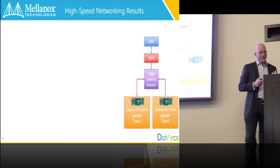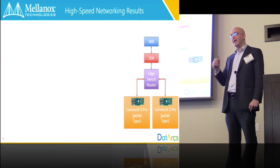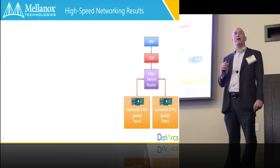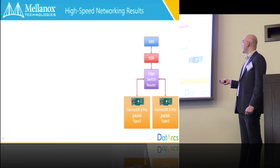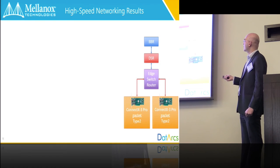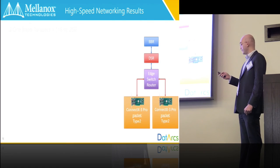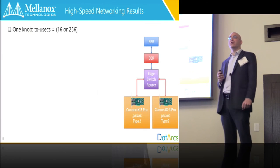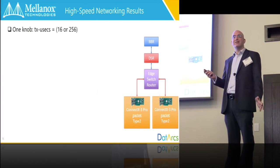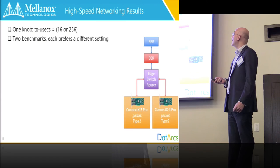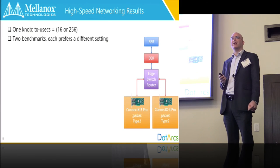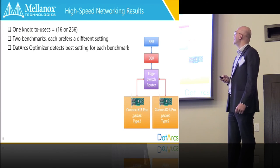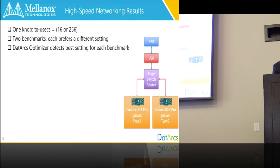Now I want to talk about the next experiment, which was done together with Mellanox and Packet. We had two servers — type 2 — connected with ConnectX-3 Pro network cards to a router. We took one knob: TX microseconds, which is the number of microseconds between transmit interrupts. We took two micro benchmarks — one that prefers 16 microseconds and one that prefers 256 — and we wanted to see whether optimizer detects it.